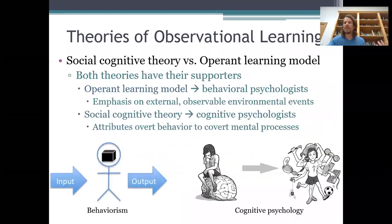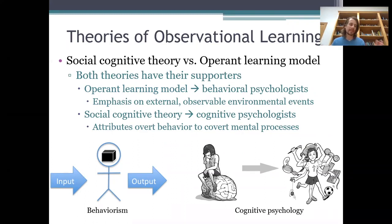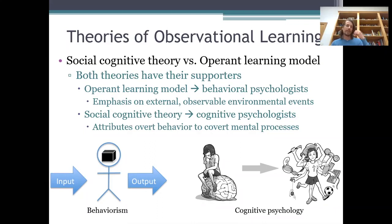The point is that both social cognitive theory and the operant learning model can account for the results Bandura observed in his Bobo Doll research — they just do it in different ways. Whereas Bandura's social cognitive theory relies on cognitive processes like attention, memory, and expectation, the operant learning model relies more on conditioning principles like discriminative stimuli, generalized imitation, and reinforcement. Both are still very popular.